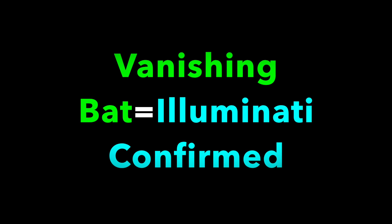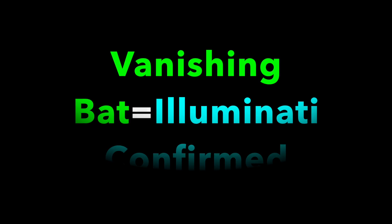But wait — did you guys notice something? 'Vanishing Bat' — that's my name. Bat has three letters. What does a bat do? That's right, it flies. 'Fly' also has three letters. What do bat and fly have in common? They both have three letters. What has three sides? A triangle. From this we can prove that Vanishing Bat equals Illuminati confirmed.